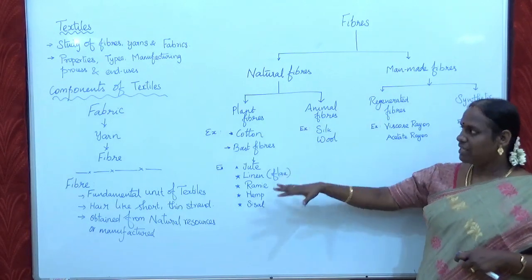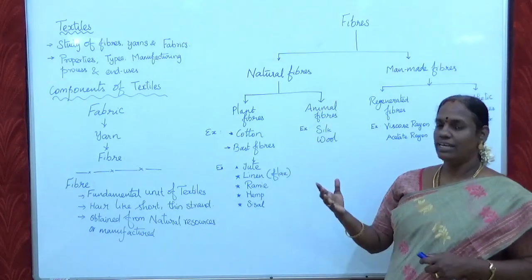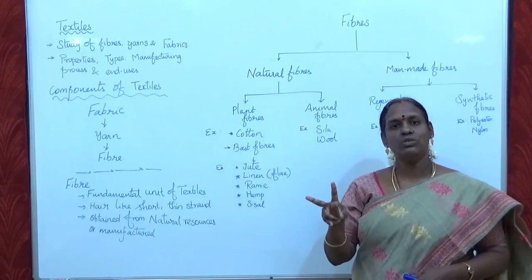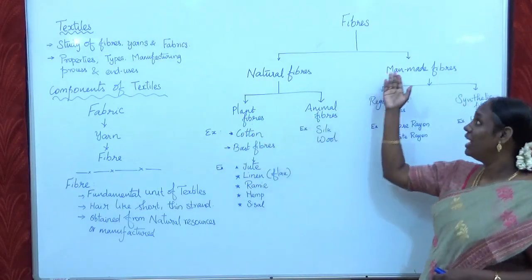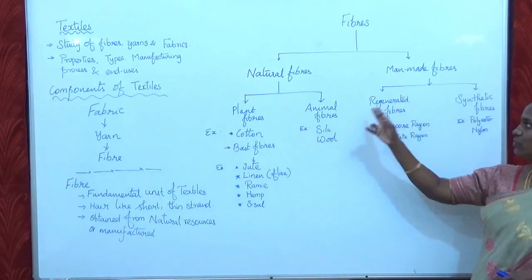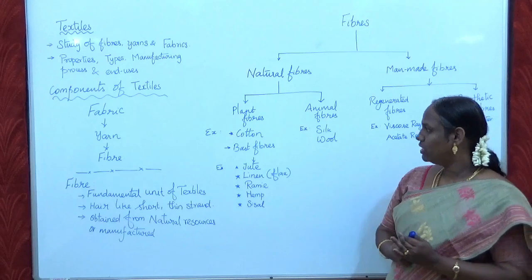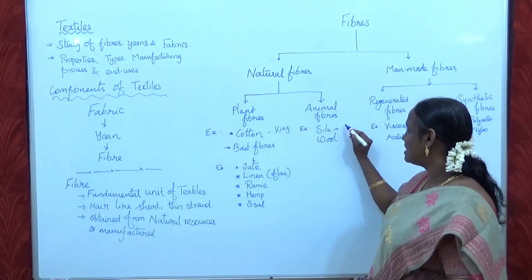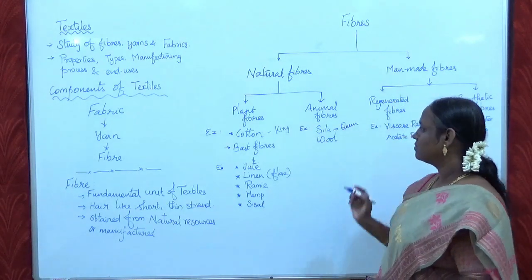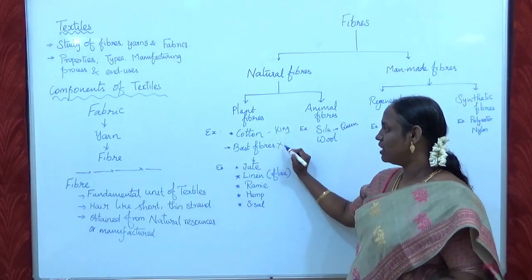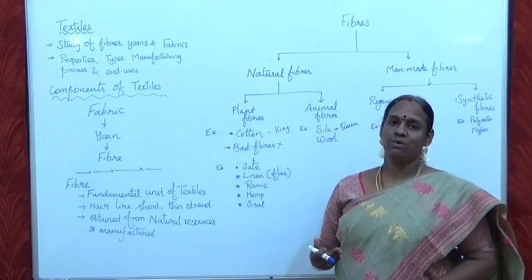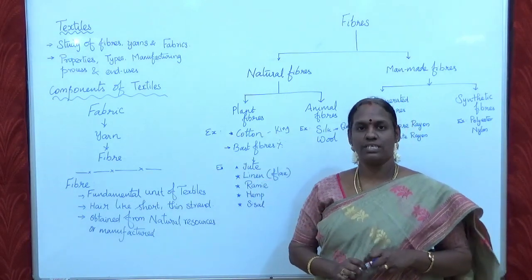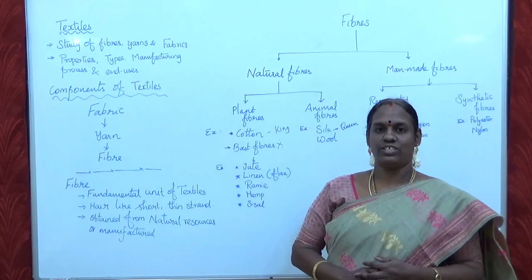Now we have discussed the basic classification of fibres. The main classifications are natural fibres and man-made fibres. Natural fibres are classified into plant and animal fibres. Man-made fibres are classified into regenerated and synthetic. Cotton is called the king of fibres and silk is called the queen of fibres. Bast fibres are obtained from the stem of the plant. In the next class, we will see the other classification of textile fibres.